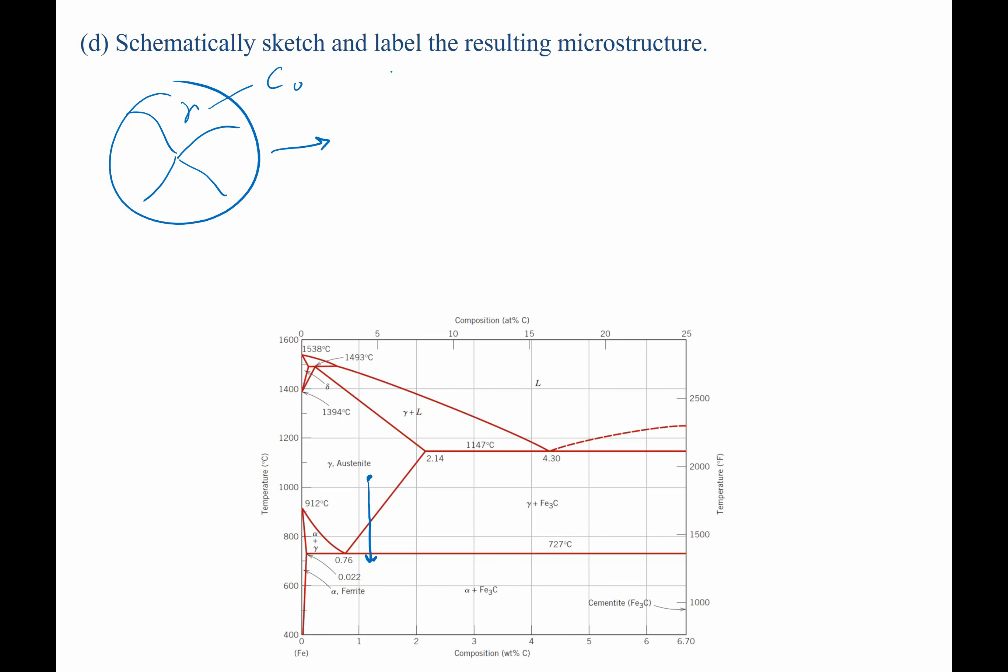However, as we cool it down just above 727 degrees Celsius, we're now going to have a structure that looks like this. Where we used to have grains, we're now going to have a secondary phase forming right along these microstructures. So we still have austenite, but now we have our pro-eutectoid Fe3C forming. That's just above the eutectoid reaction.